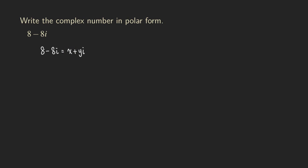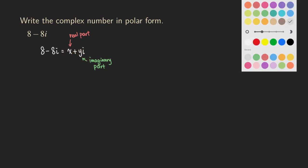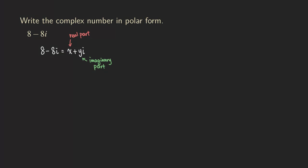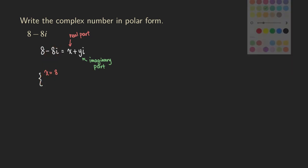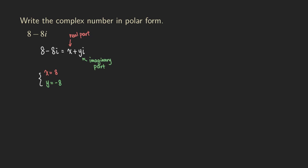You can see that x is the real part right here. And then what about the imaginary part? The y is the imaginary part — it's the number that's attached to the i. So by comparing them, x is equal to 8, and y is the number attached to the i, which is negative 8. So y is equal to negative 8.